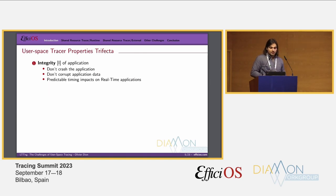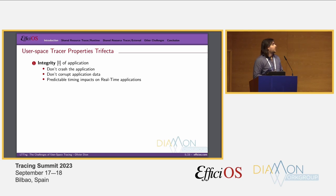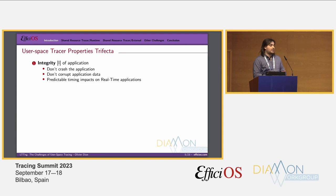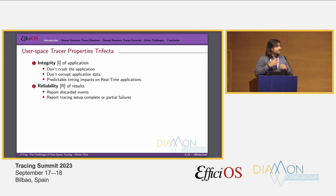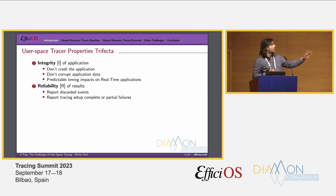The user space tracer property trifecta: we have three properties we want for a user space tracer. The first is the integrity of the application, denoted as I for the rest of the talk. For example, you don't trash or corrupt the application data, and you have predictable timing impacts on real-time applications so you don't miss deadlines. Integrity is in decreasing order — it is the most important property the tracer must have.